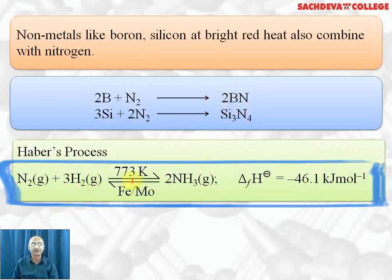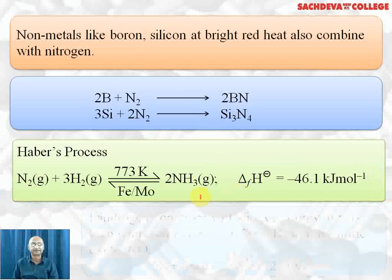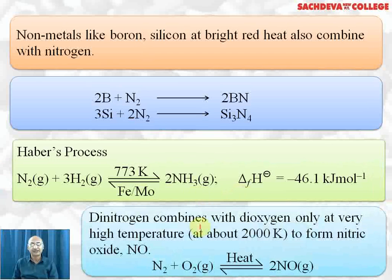Haber process: nitrogen reacts with hydrogen at 773 Kelvin in the presence of iron as a catalyst and molybdenum as a promoter to form 2 moles of ammonia. The heat of formation is −46.1 kJ/mol; it is an exothermic process, which means ammonia is quite stable.